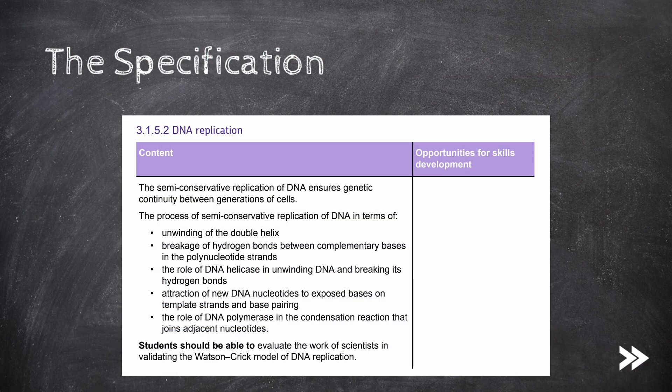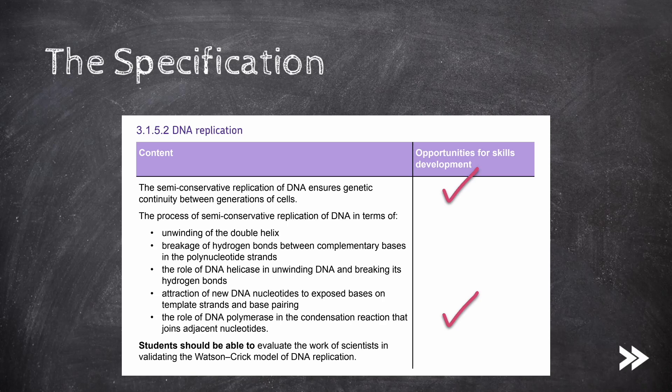That covers DNA replication. We know that semi-conservative replication of DNA ensures genetic continuity between generations of cells. We know the process of semi-conservative replication in terms of the unwinding of the double helix, the breakage of hydrogen bonds between complementary bases, the role of DNA helicase in unwinding DNA, the attraction of new DNA nucleotides to exposed bases on template strands and base pairing, as well as the role of DNA polymerase in joining new adjacent nucleotides. Finally, we have covered the work of scientists in validating the semi-conservative model of DNA replication, which was proposed by Watson and Crick.